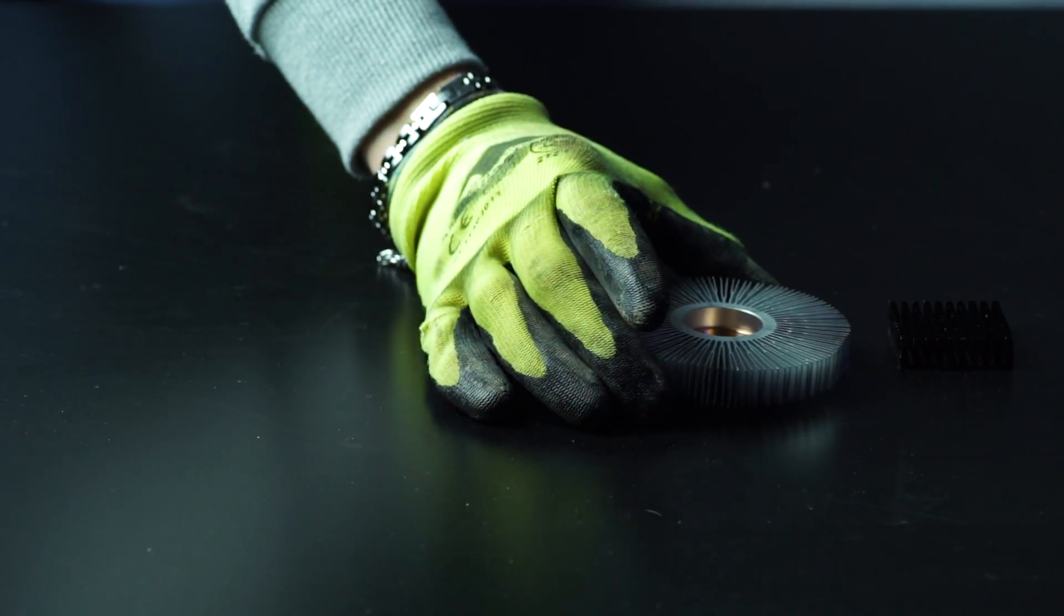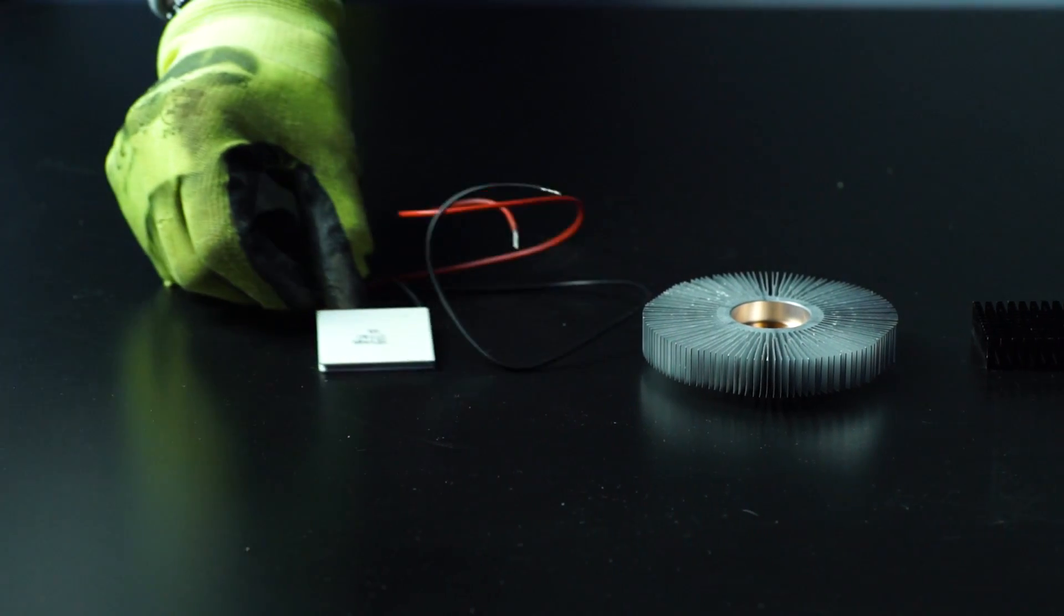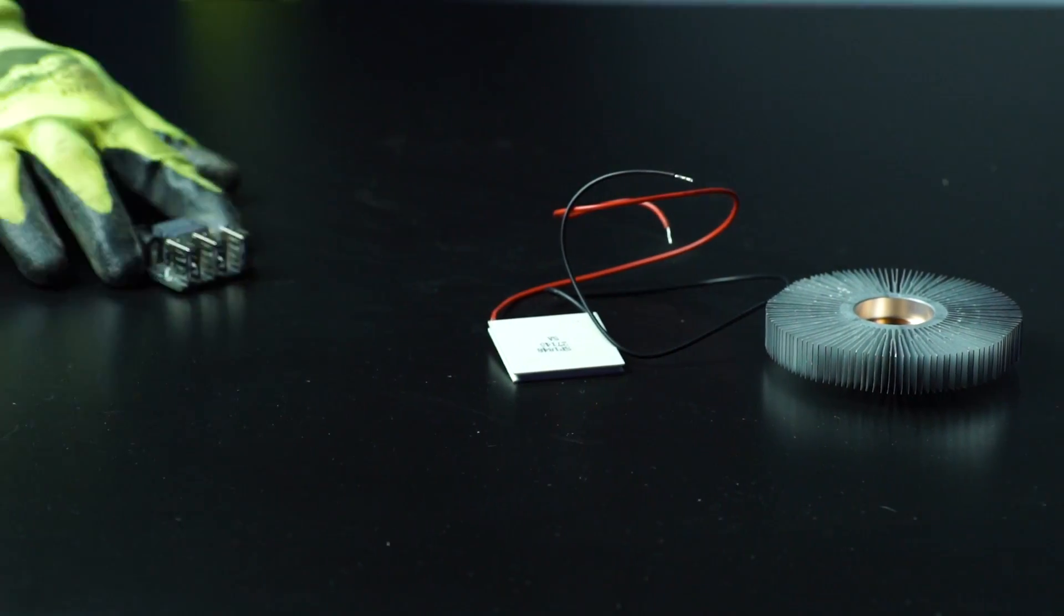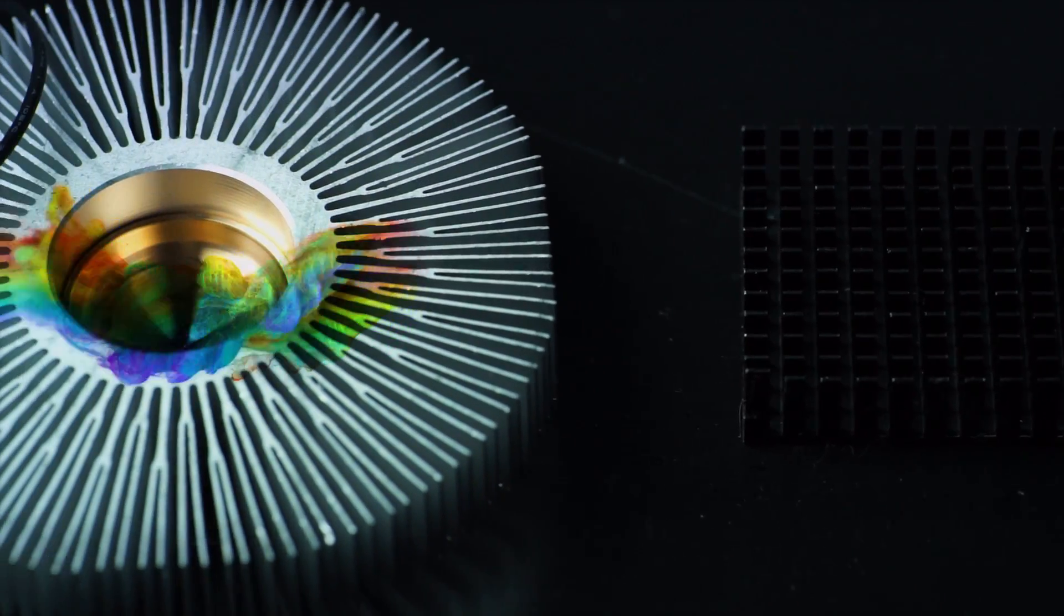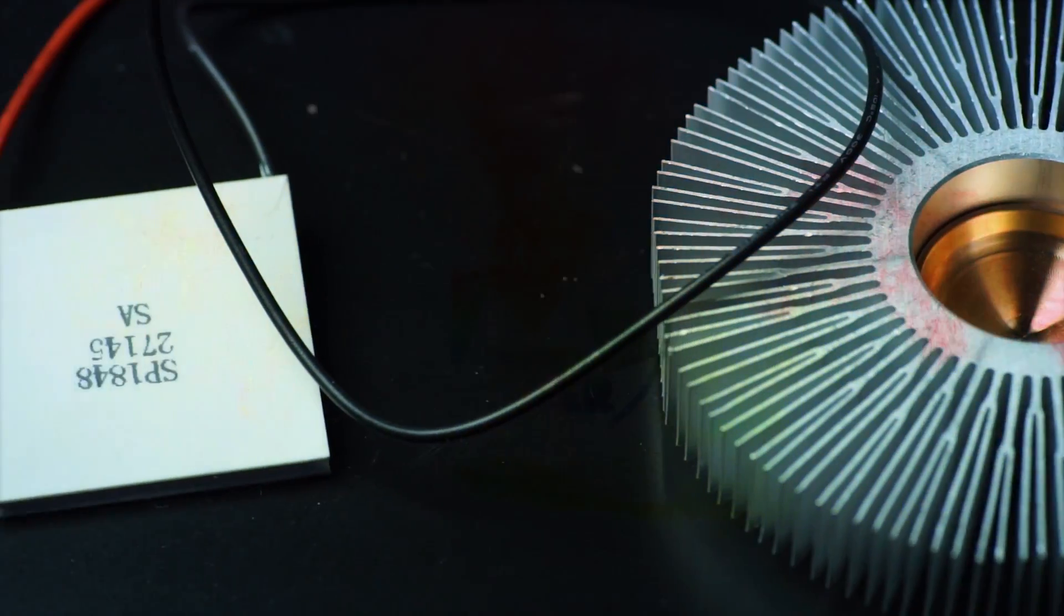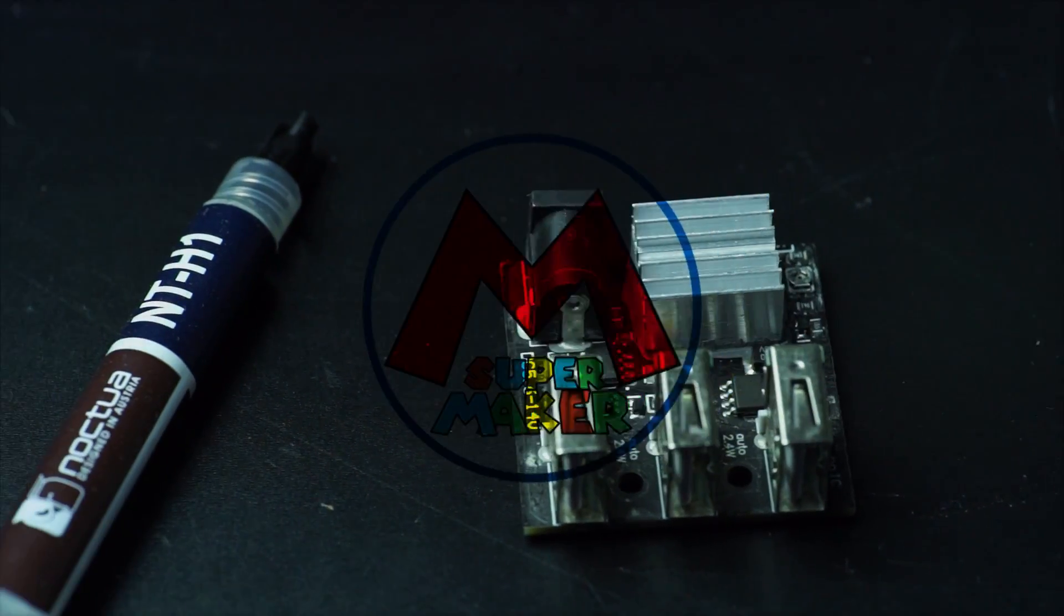To make a Peltier energy generator you will need two heat sinks, a Peltier cell, and a voltage regulator with USB outputs. And yes, don't forget the thermal grease!